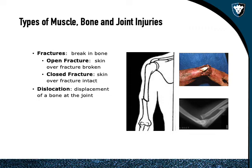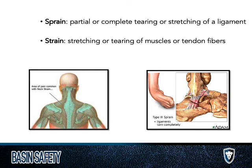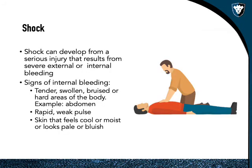Muscle, bone, and joint injuries include open and closed fractures — whether or not the skin is broken — as well as dislocations, which are displacement of a bone at the joint. Sprains are partial or complete tearing or stretching of a ligament; strains are stretching or tearing of muscles or tendon fibers. These are typically minor unless too much pressure is put on them, so remove weight and pressure from the injury.